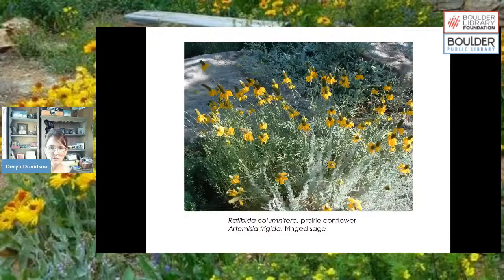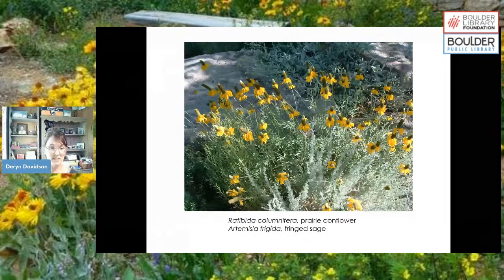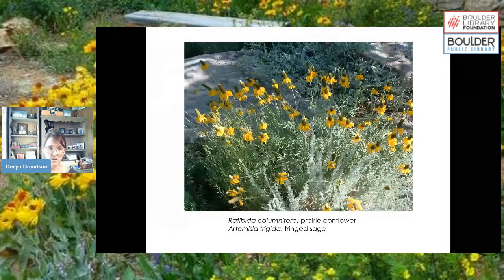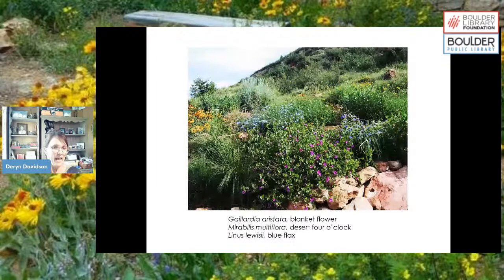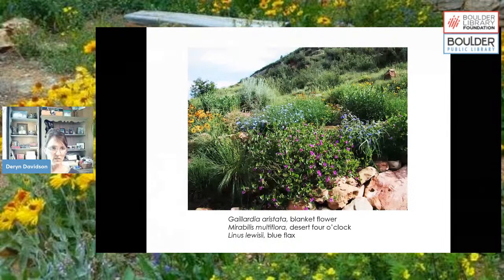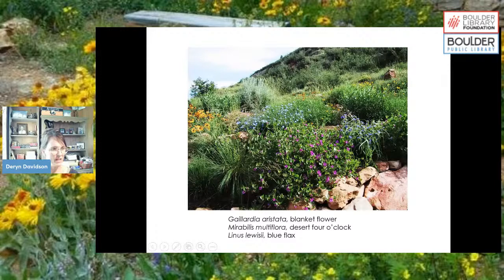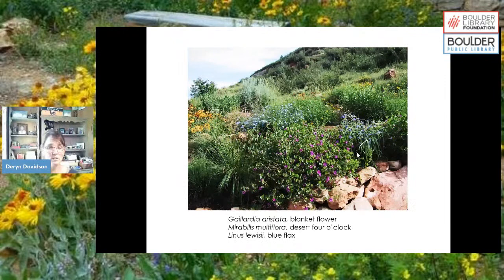A final plant combination shows Ratibida (prairie coneflower) paired with Artemisia frigida, a different artemisia with a more finely cut leaf and that nice soft gray color. Another combination features Gaillardia aristata in orangey-yellow, Mirabilis multiflora (desert four o'clock), blue flax, and Tradescantia (spiderwort), which has a delicate purpley-blue flower, with some grasses mixed in as well.